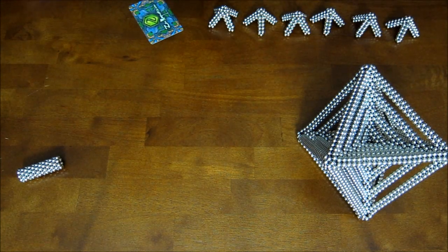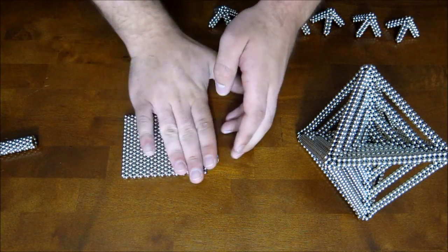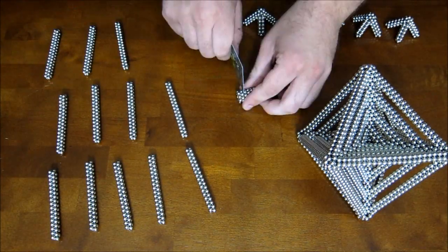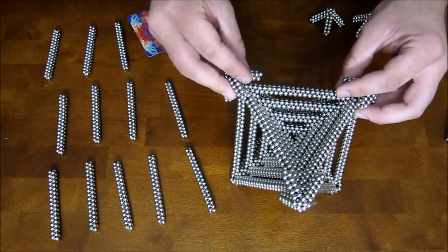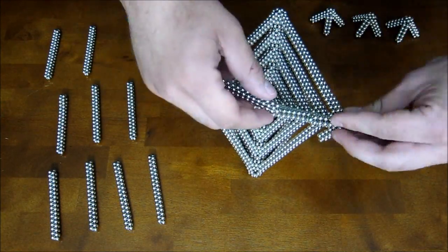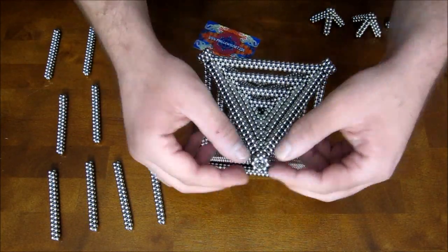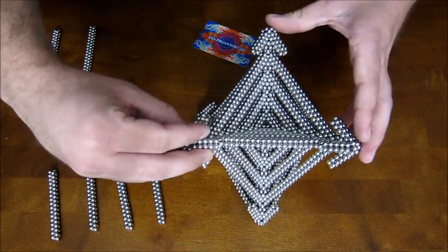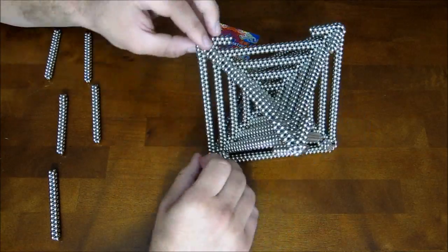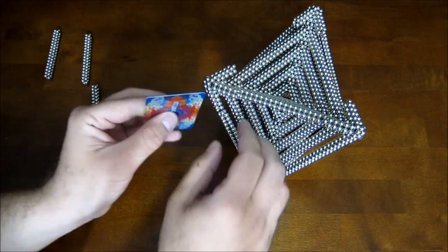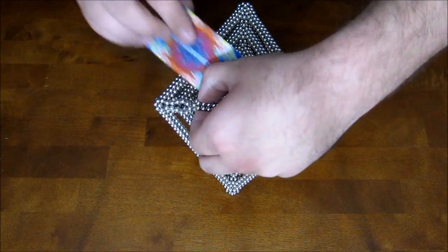And that's layer four. And for layer five, again, exact same thing except now you're using stacked rings of 34 magnets to make the connections between corners.